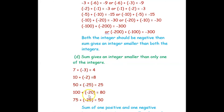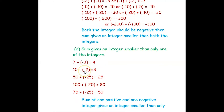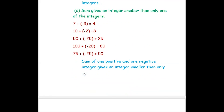Looking at all these examples, our answer is less than one of the integers. This condition is possible by taking one positive integer and one negative integer — in that case the sum will be smaller than one of the integers.